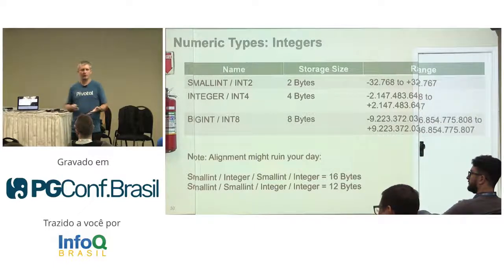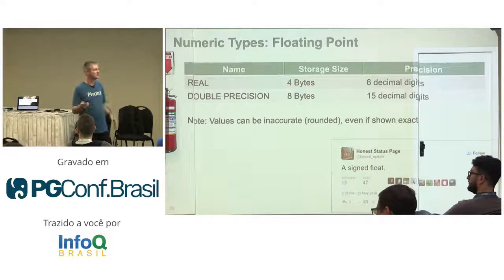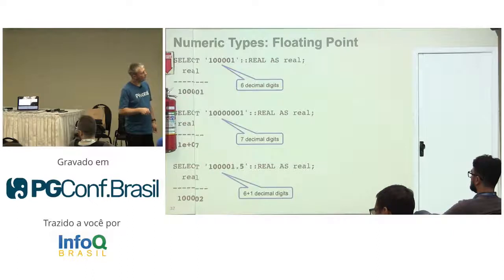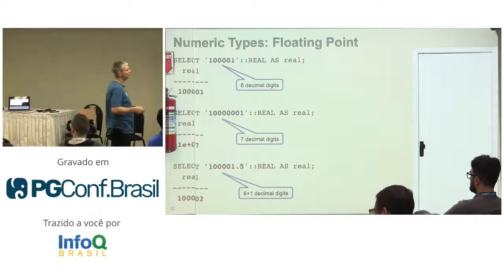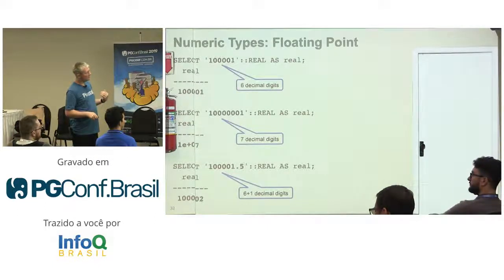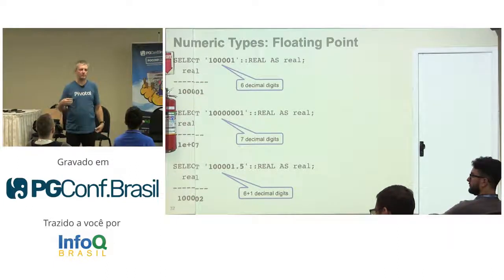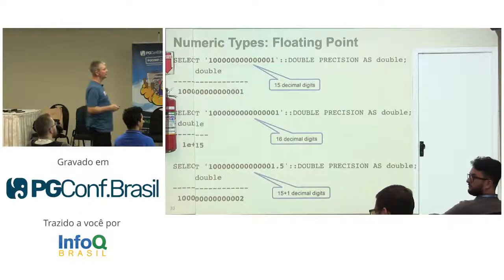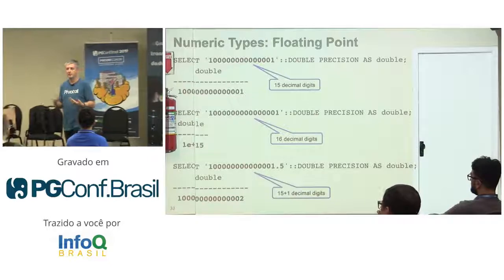Floating point numbers are always rounded — they are based on an exponent. Even though Postgres might show you what looks like the real number, internally it's still rounded. If you have six digits and cast to real, Postgres may still show you the number you entered, but if you add one more digit, Postgres starts rounding even in the output. So internally we no longer have all the information stored in the field. The same is true for double precision — we have about 15 digits we can store accurately.